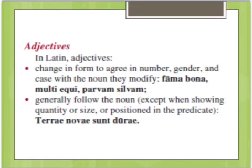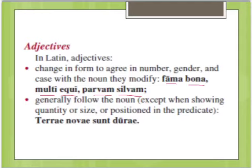In Latin, adjectives — words that modify or describe nouns — also have cases and numbers. They will have the same number, gender, and case as the noun they modify. Note that they don't necessarily have the same declension. For the most part the endings will be the same, like in 'fama bona,' meaning a good report, or 'multi equi,' many horses, or 'parvam puellam,' a small girl, but not necessarily. When we start learning more declensions and more complicated nouns, they won't always have the exact same ending. Generally adjectives follow the noun, except when they show quantity or size. Word placement is not that important, and sometimes adjectives don't have to be right next to their noun.